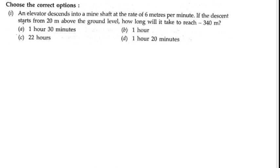Choose the correct options. An elevator descends into a mine shaft at the rate of six meters per minute. The descent starts from 20 meters above the ground. How long will it take to reach 340 meters below the ground? Here you can see it is negative because it is below the ground. Let us start the solution.